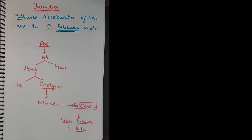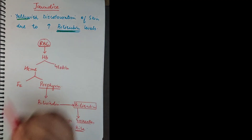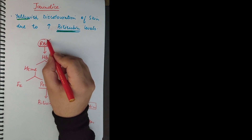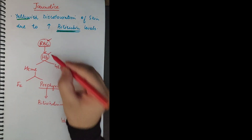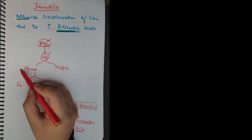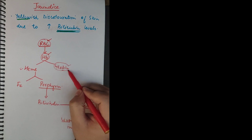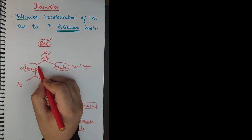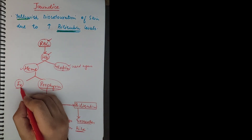To understand this concept we have to understand the destruction of RBCs. An old RBC is destroyed in the spleen. When the RBC is destroyed in the spleen, it liberates hemoglobin. Jab RBC tootta hai toh hemoglobin nikalta hai. This hemoglobin is broken down into two things: globin and heme. Globin is a protein and it is used again, while heme is further broken down into two things: iron and a porphyrin ring.